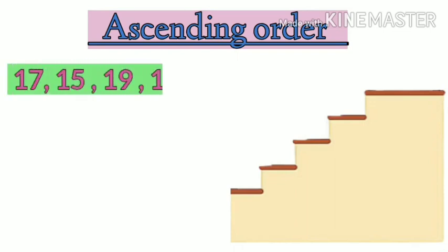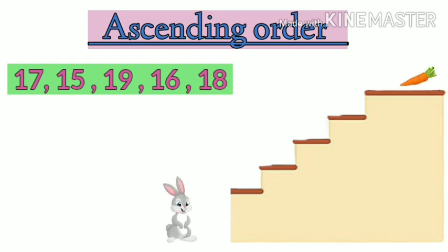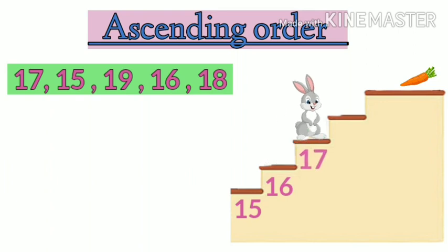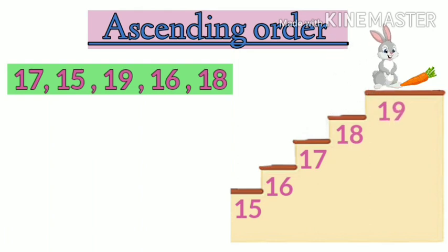So the numbers are, as you can see on the screen, 17, 15, 19, 16, 18. Let the rabbit jump. So what will be the first number? First number is 15, the smallest number. Next, 16, 17, 18 and 19.